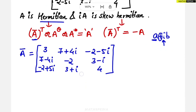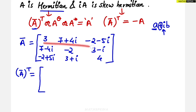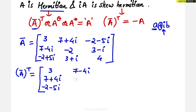This is A conjugate. Now we have to find the conjugate transpose — transpose means rows become columns and columns become rows. Taking the first row and making it a column: 3, 7+4i, −2−5i. Second row becomes second column: 7−4i, −2, 3−i. Third row becomes third column: −2+5i, 3+i, 4.